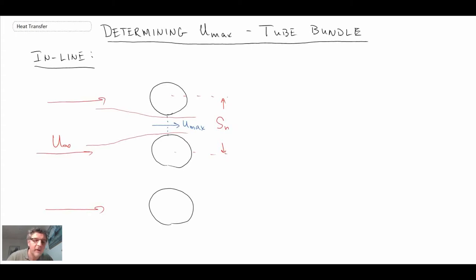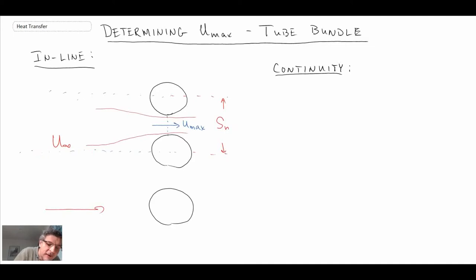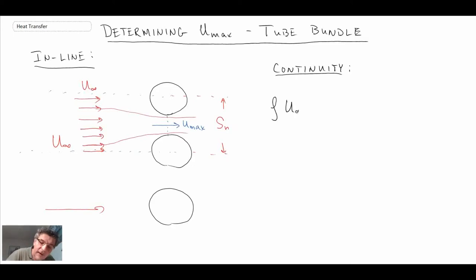To evaluate Umax for the inline configuration we rely on fluid mechanics and the continuity equation. We look at the mass flow coming in over a section of flow, and on the inlet side we have the density multiplied by the free stream velocity U∞ times Sn, the normal spacing, assuming unit width.